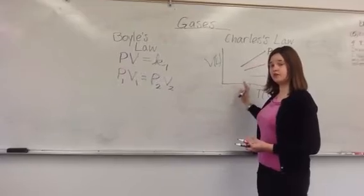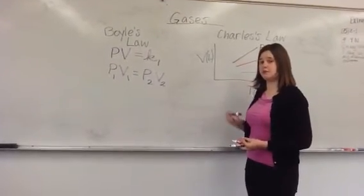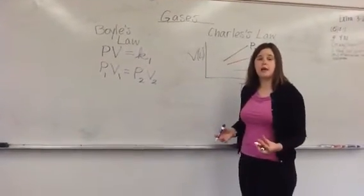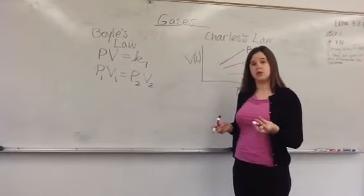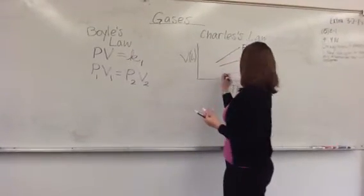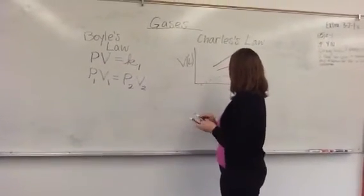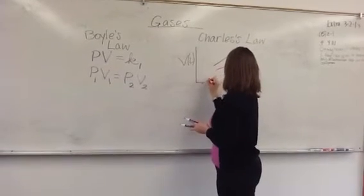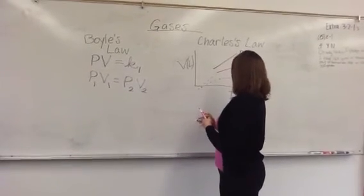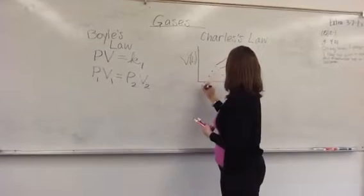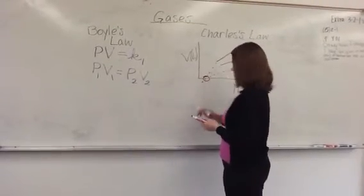You can only measure the volume up to a certain temperature. Below that temperature, the gas condenses into a liquid. But, if you extrapolate backwards, all of the lines intersect at a specific point.